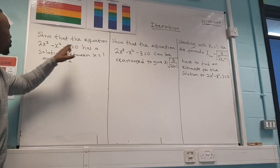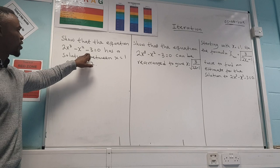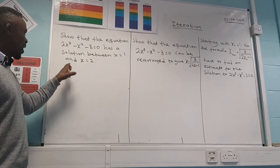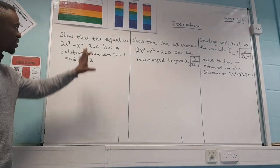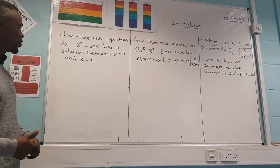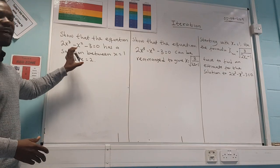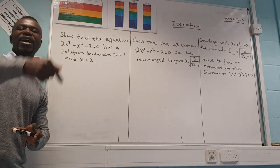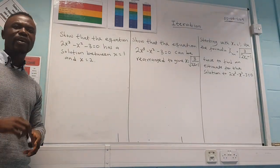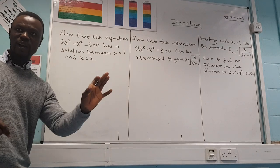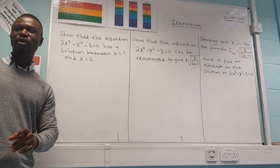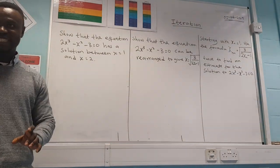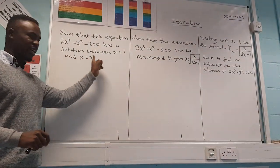Part A says: show that the equation 2x³ − x² − 3 = 0 has a solution between x = 1 and x = 2. This is the easiest part, but mostly students get confused. What they are looking for is a change of sign — one of your answers will be positive and one will be negative.